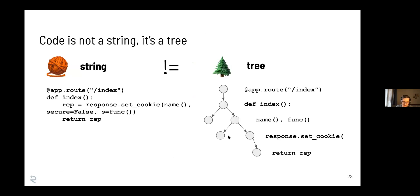These are the first problems with grep. The reason this problem exists is because grep searches through strings - regular expressions are meant to search through strings. Code, however, on its deepest philosophical level, is not a string. The text you see for code is just a way of representing what it actually is that's easy for us to read - it's a human-friendly representation of what's actually executing.